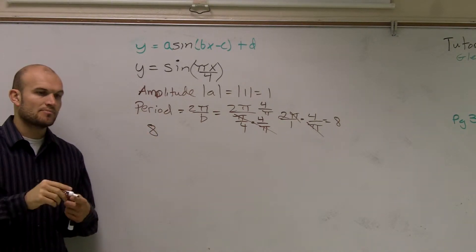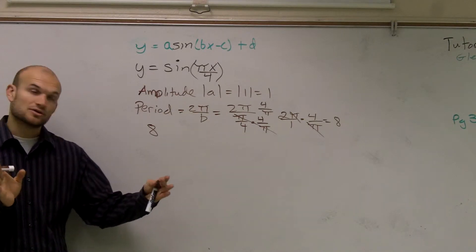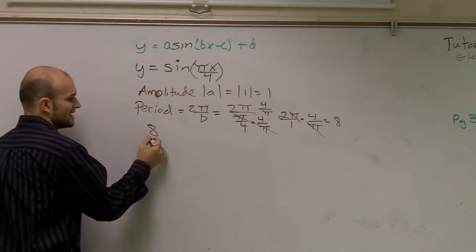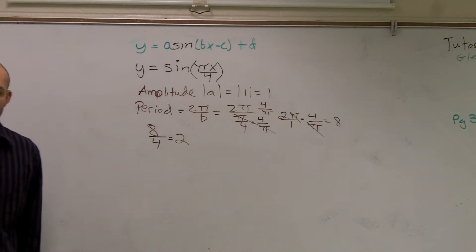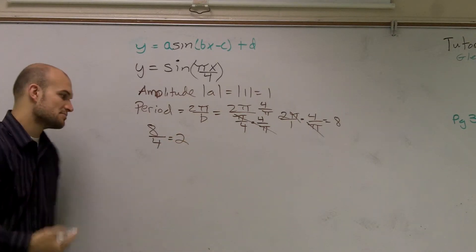That we have our max, our min, and our intercept. In one cycle, there's four important points. So if I take 8 divided by 4, I get 2. That means there's an interval of 2 between each of those important points.